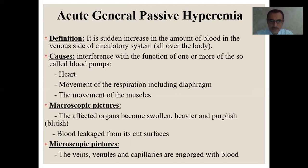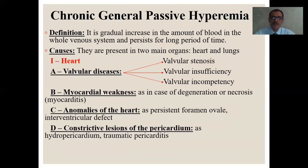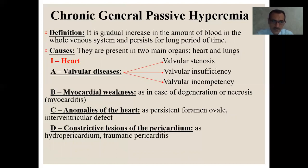Microscopically, the veins, venules, and capillaries are engorged with blood. Chronic general passive hyperemia is a gradual increase in the amount of blood in the whole venous system, persisting for a long period of time. The causes are present in two main organs — the heart and the lungs. In the heart: valvular diseases including valvular stenosis, valvular insufficiency, and valvular incompetency; myocardial weakness as in degeneration or necrosis during myocarditis; anomalies of the heart such as persistent foramen ovale, interventricular defect; and constrictive lesions of the pericardium such as hydropericardium and traumatic pericarditis.